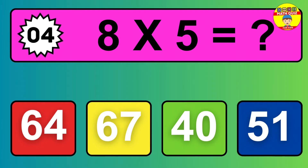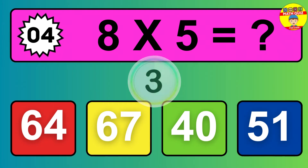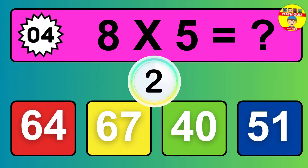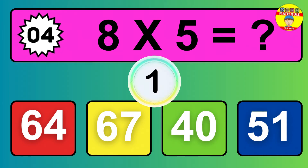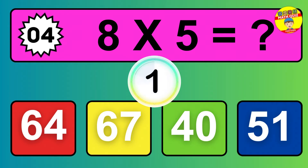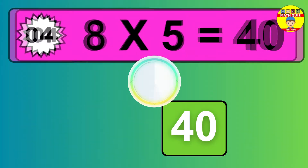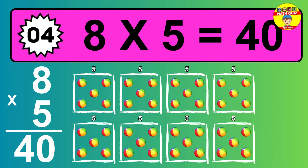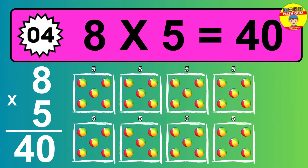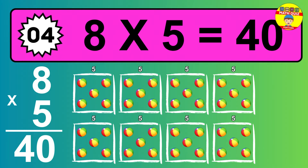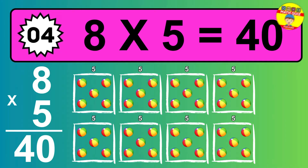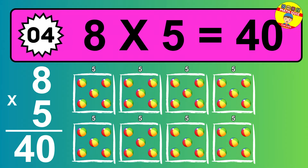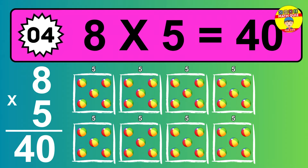Question 4. 8 times 5 equals what? The answer is 8 times 5 is 40. To calculate, we have 8 groups with 5 balls each one. So how many balls do we have? 40 balls.